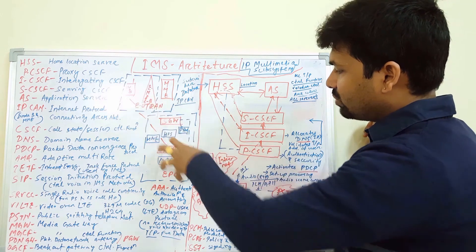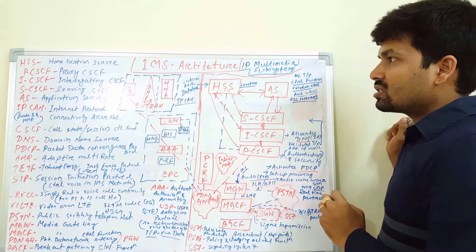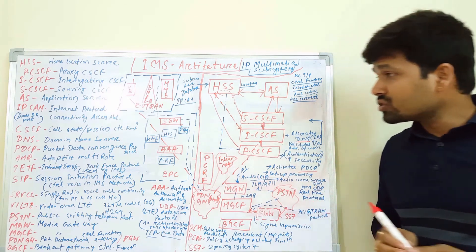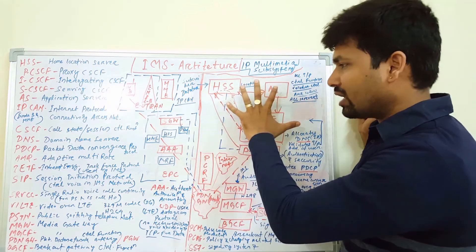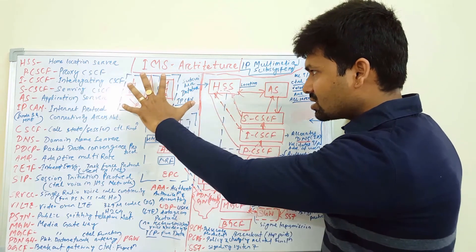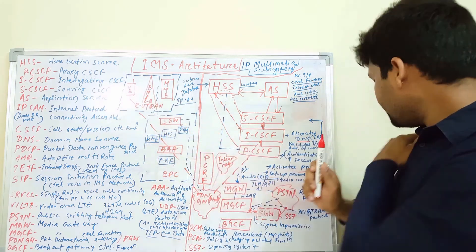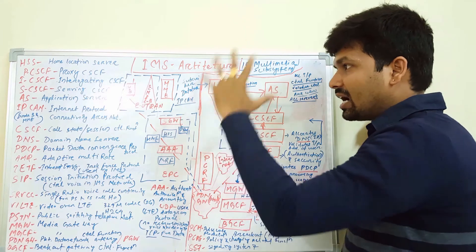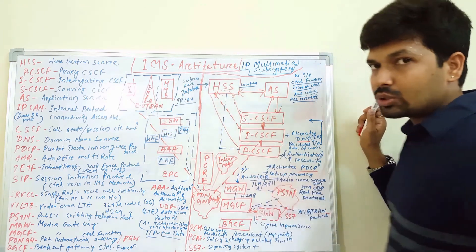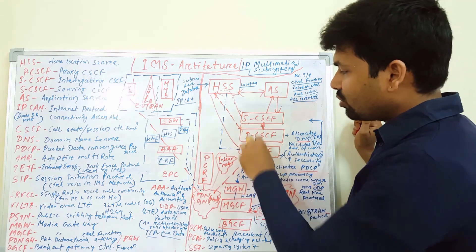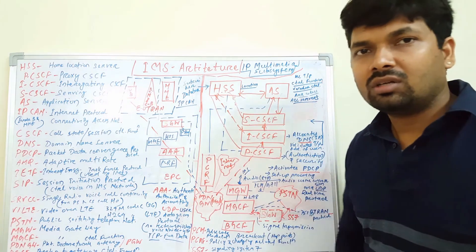That's how VoIP calls flow from the UE via the PDN in the IMS. That's all about the IMS architecture introduction. In the next session we will focus only on the IMS part and the VoIP call flow, discussing the interfaces and more detail about each of these entities.